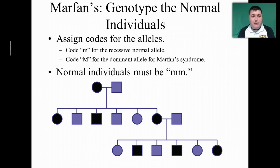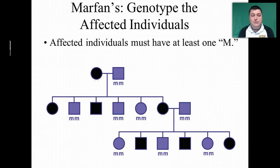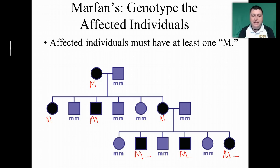To work with the pedigree, the first thing we want to do is figure out what letters to use for our alleles. Let's use lowercase m for the normal allele and uppercase M for Marfan syndrome. Anybody who does not express Marfan syndrome has to be homozygous recessive, because if they had the dominant gene, they would be showing the trait. Anybody showing the trait must have at least one dominant allele, so we can note that with a dash for the unknown second allele.